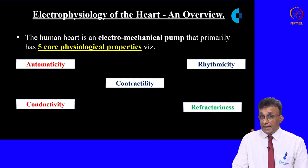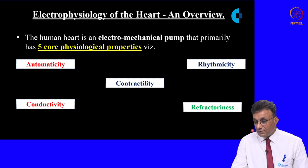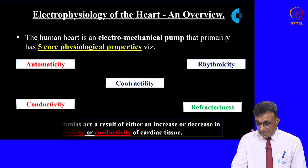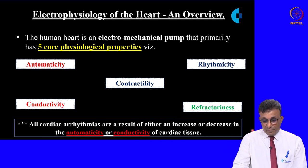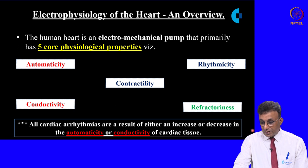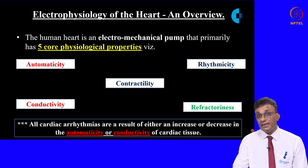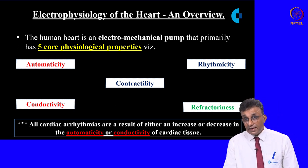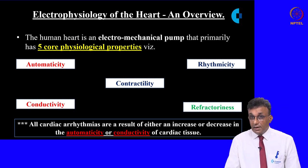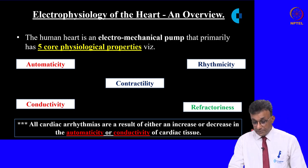There is another electrical property known as refractiveness — the duration of an action potential where a second stimulus will not be able to generate another impulse. Most cardiac arrhythmias are due to either an increase or decrease in the automaticity and conductivity of the heart. Refractiveness is also essential to understand how arrhythmias develop.